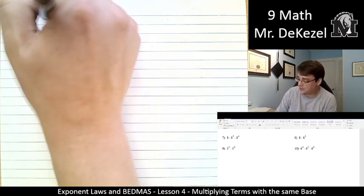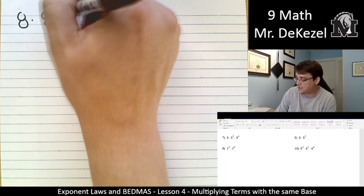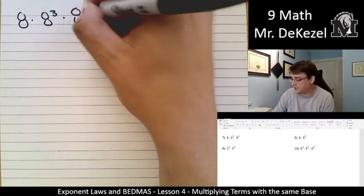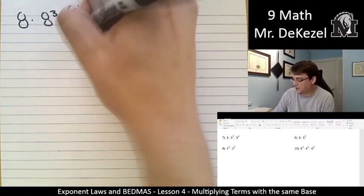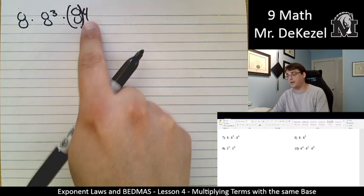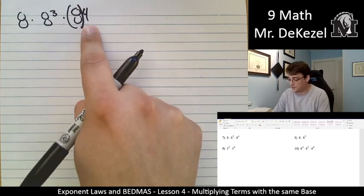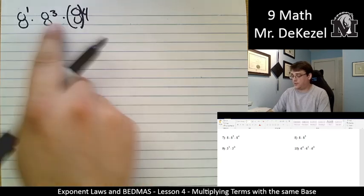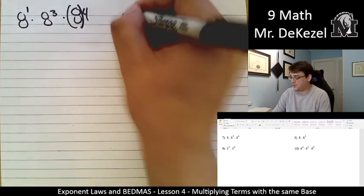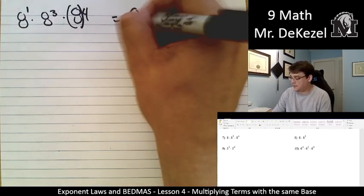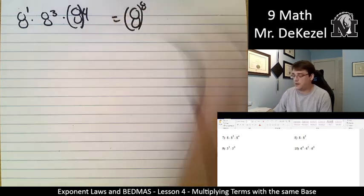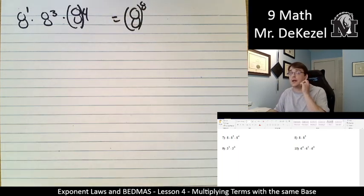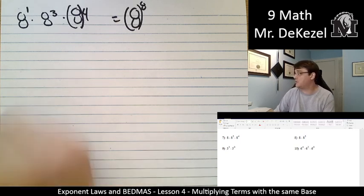8 times 8 to the power of 3 times 8 to the power of 4, ooh, that is an ugly one. I'm going to put a bracket here, just so that we can see that that should be a power, that is an ugly 4, but that's okay. 8 to the power of 1, so 1 plus 3 is 4, plus 4 is 8. This is 8 to the power of 8, something that I am not comfortable doing even on paper. That is a huge one.